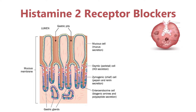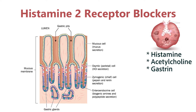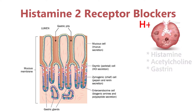So how do the histamine 2 receptor blockers work? When there's stimulation of the parietal cell from gastrin, histamine, and also acetylcholine — all three of those at the same time, not just one of them — the proton pumps in the parietal cells start secreting the protons, or in other words, the hydrogen ions, the acid.